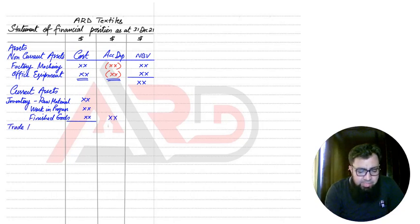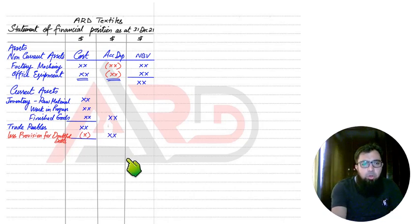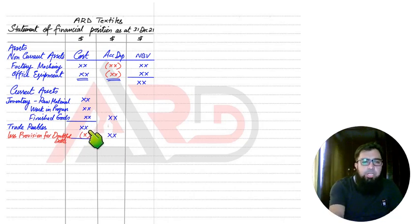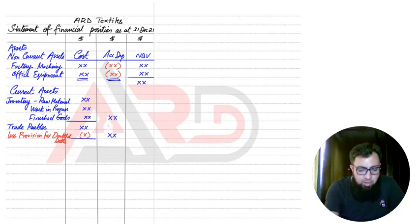After inventory, everything is the same. We have trade receivables, and we need to deduct the provision for doubtful debt. We do not show bad debt — irrecoverable debt — here because it is already deducted from the trade receivables figure. The trade receivables figure we write will be the net figure. We show only the provision for doubtful debt here. Then we have other receivables, which would be prepaid expenses or accrued income.